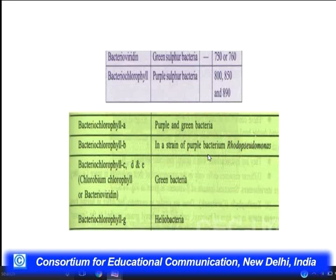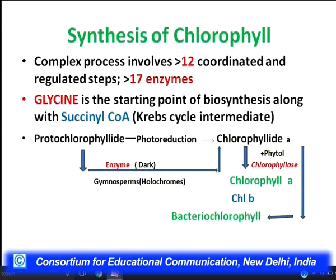Bacteriochlorophylls are distributed in different forms of bacteria: Heliobacteria, Green Bacteria, and Purple Bacteria. Purple Bacteria contain bacteriorhodopsin, a pigment quite similar to the visual purple in our eyes — another interesting analogy between the plant and animal worlds.